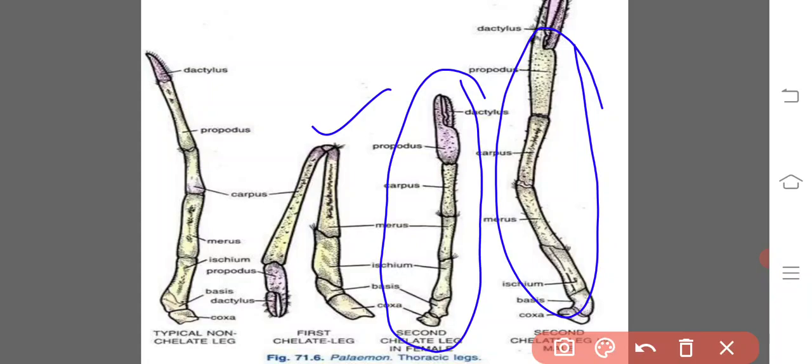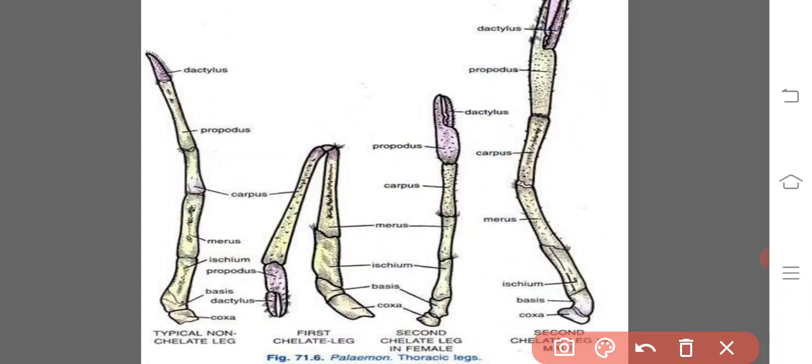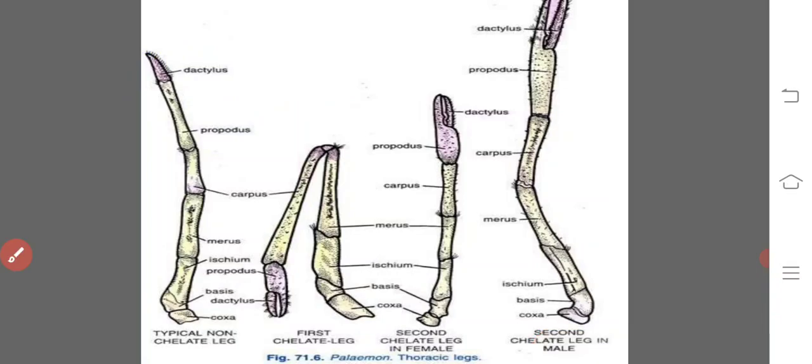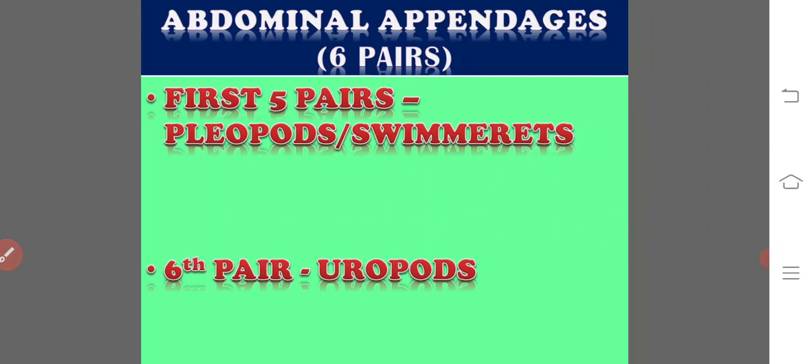The third, fourth, and fifth pairs of walking legs are similar to typical legs but lack the chelate structure, so they are used only for walking. In females, each of the third walking legs bears a female reproductive aperture on the inner side of the coxa, while in males the fifth walking leg coxa bears the male genital aperture.